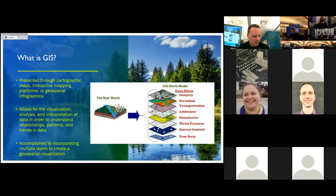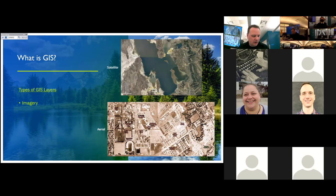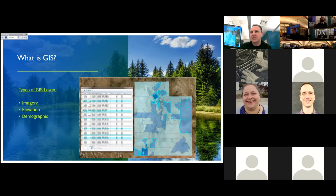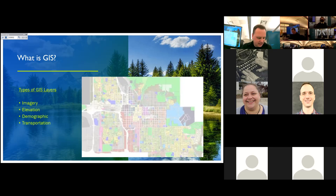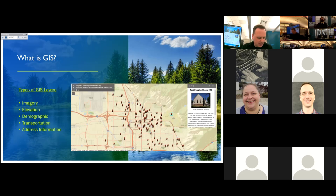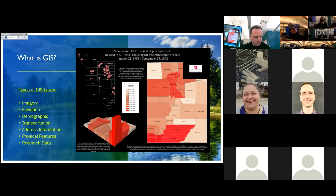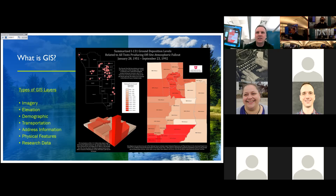This is accomplished through the incorporation of multiple layers which, when brought together, create a geospatial visualization that expresses and enhances data by incorporating visual resources. These layers can include imagery such as satellite or aerial photographs; elevation datasets such as contour lines or elevation models; demographic datasets such as census information; transportation datasets such as street networks or railways; address information such as geocoded locations; physical features including boundaries, hydrology, and survey control points; as well as research data. Bringing this information together provides an educational experience and a method for researchers to answer questions, relay findings, and identify solutions.